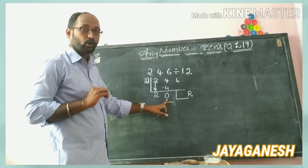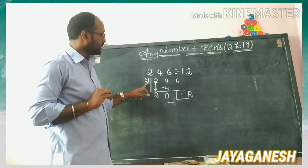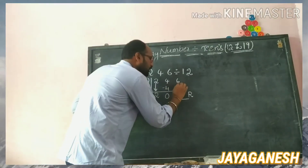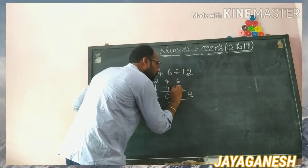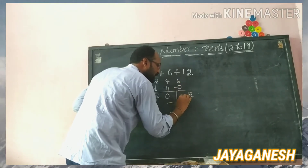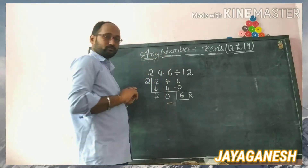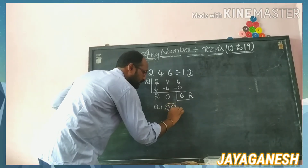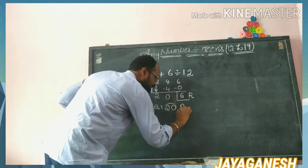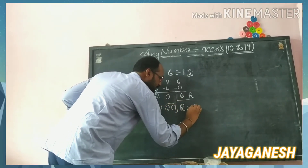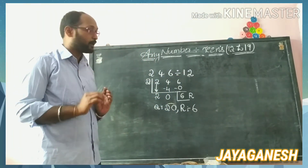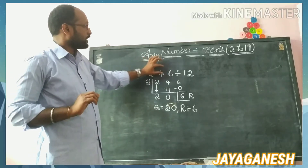The new number is now 0. Multiply again with the divisor: 2 times 0 is 0. Write it down and subtract: 6 minus 0 is 6. So my quotient is 20 and my remainder is 6.